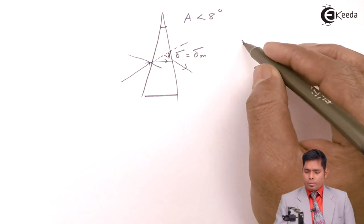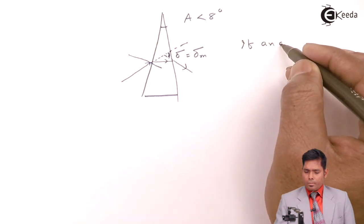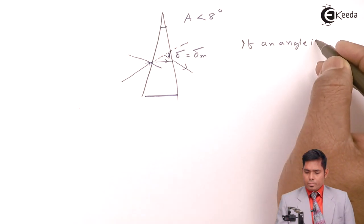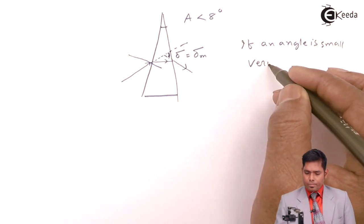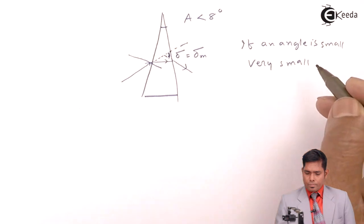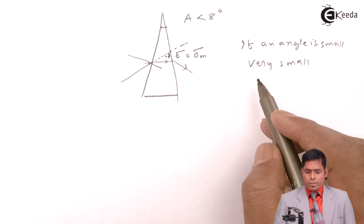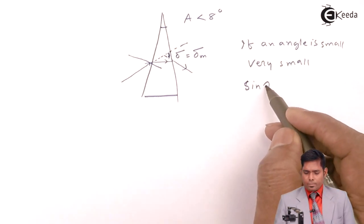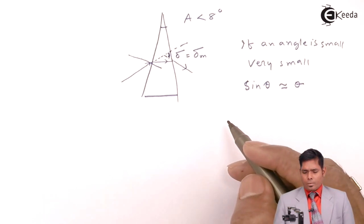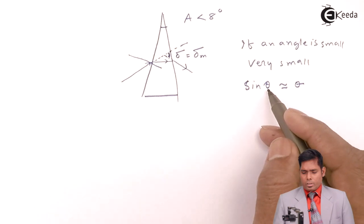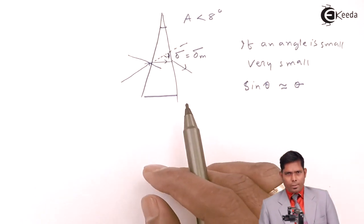We know that if an angle is small, very small, then sine theta is replaced by theta. So sine of this theta, the sine is dropped, only theta is retained.